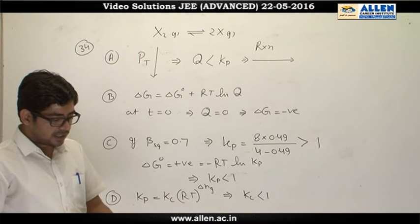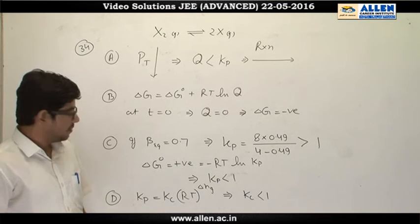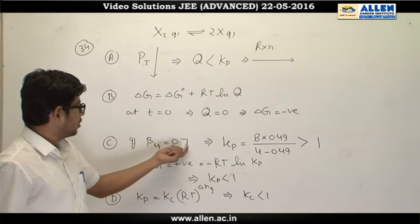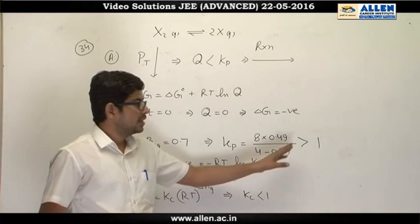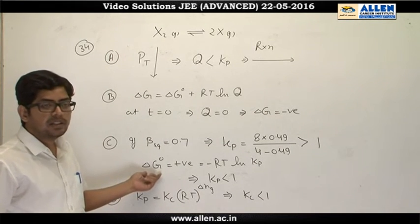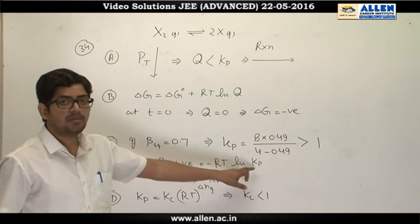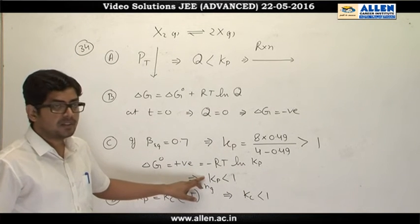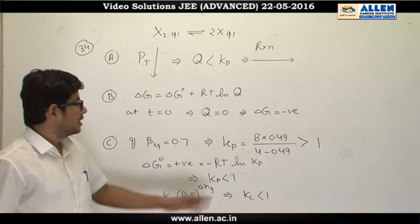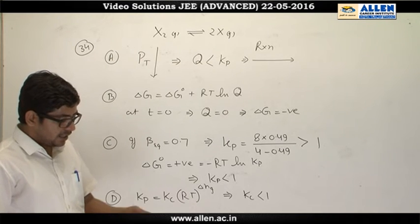Option C states beta_eq = 0.7. Checking with the Kp formula derived in Q33, substituting beta = 0.7 gives Kp > 1. However, the question states delta G° is positive, and since delta G° = −RT ln Kp, a positive delta G° means Kp < 1. This contradicts the result from beta = 0.7, so Option C is incorrect.